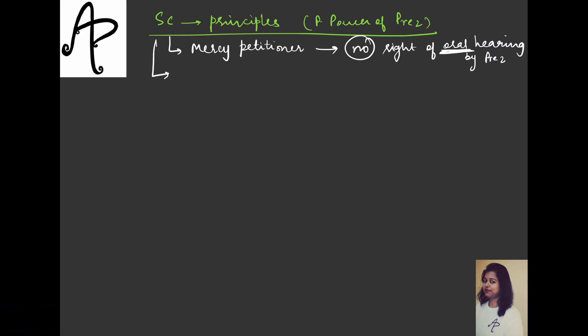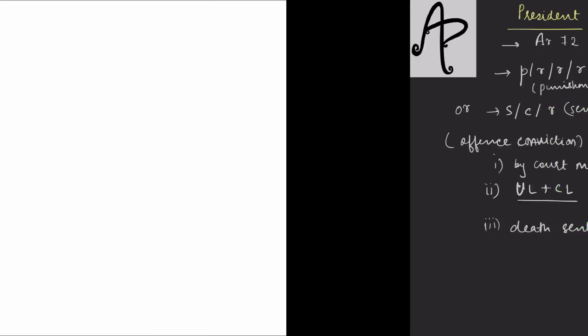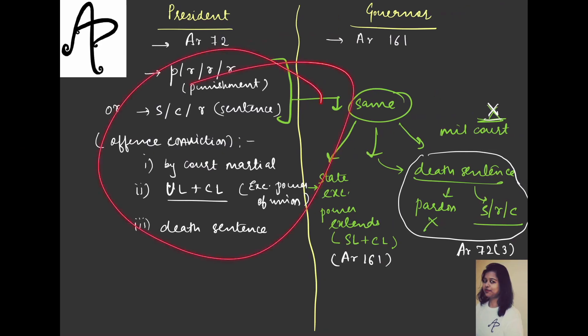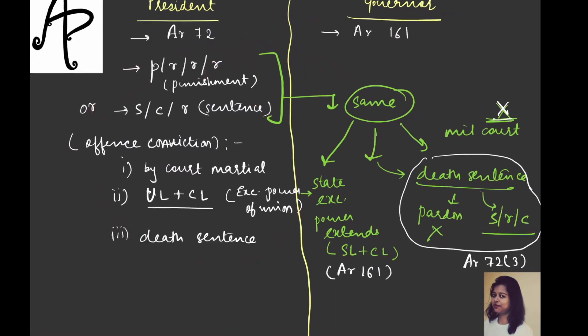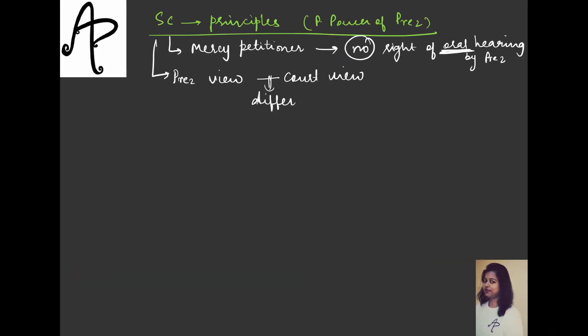The Supreme Court also said that the President's view can differ completely from the court's view. Because here, what is happening is that a punishment or sentence already declared by a court — civil or military — is being reduced or altered. The President's view can completely differ from that court's view. Also, if the President wants, they can start investigating or re-examining evidence fresh, in any matter.